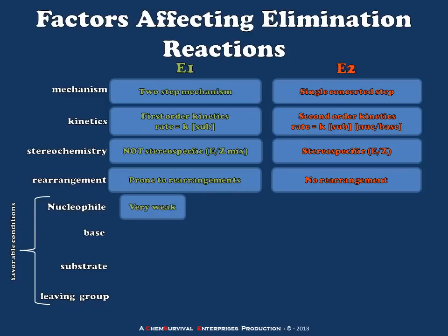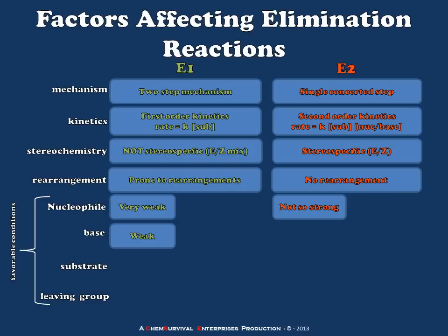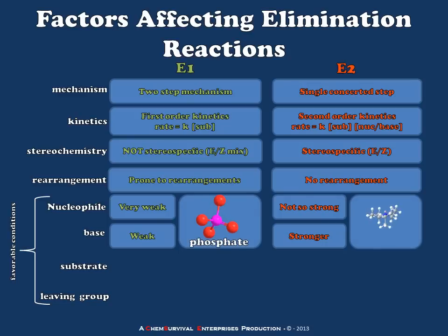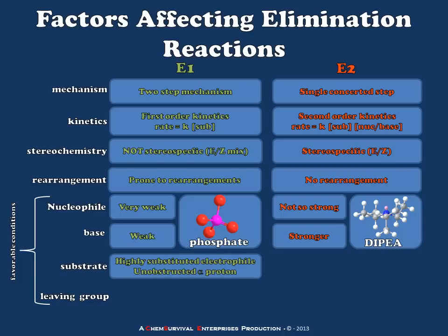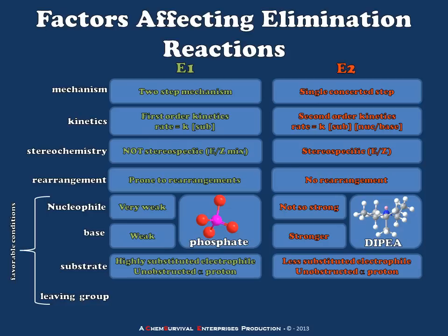As far as conditions which promote each of these reactions, we expect to have a very weak nucleophile for E1 and a relatively weak nucleophile for E2. That same species, which is a very weak nucleophile, should act as a relatively decent base. But remember, in an E1 reaction, if our base is really strong, we're going to start pushing ourselves in the direction of an E2 reaction — for example, using phosphate ion to promote E1, or diisopropyl ethylamine to promote E2. From the perspective of the substrate, we expect an E1 reaction to have highly substituted electrophiles and unobstructed alpha protons, while E2 electrophiles can be less substituted because no carbocation needs to form, but we still need that accessible alpha proton.